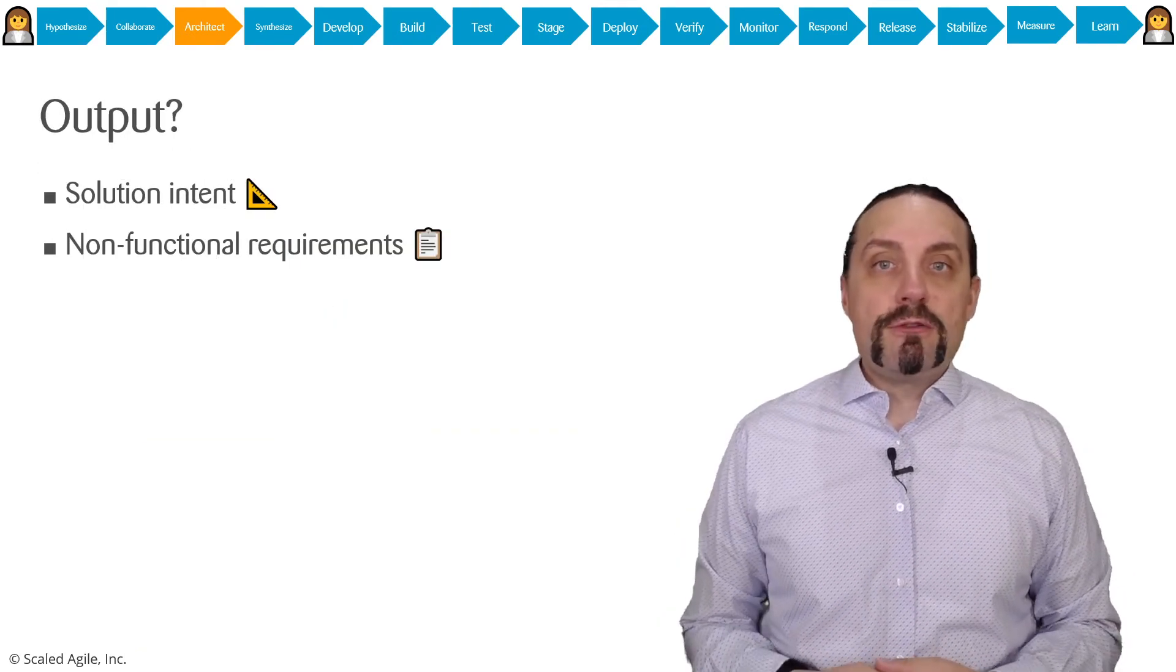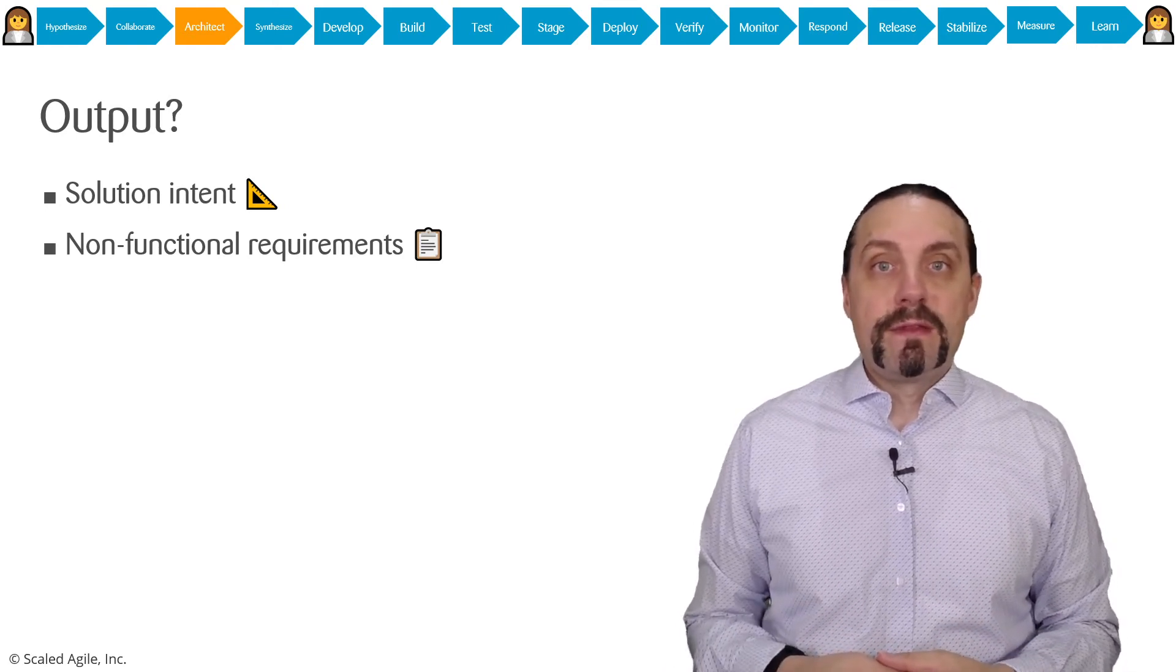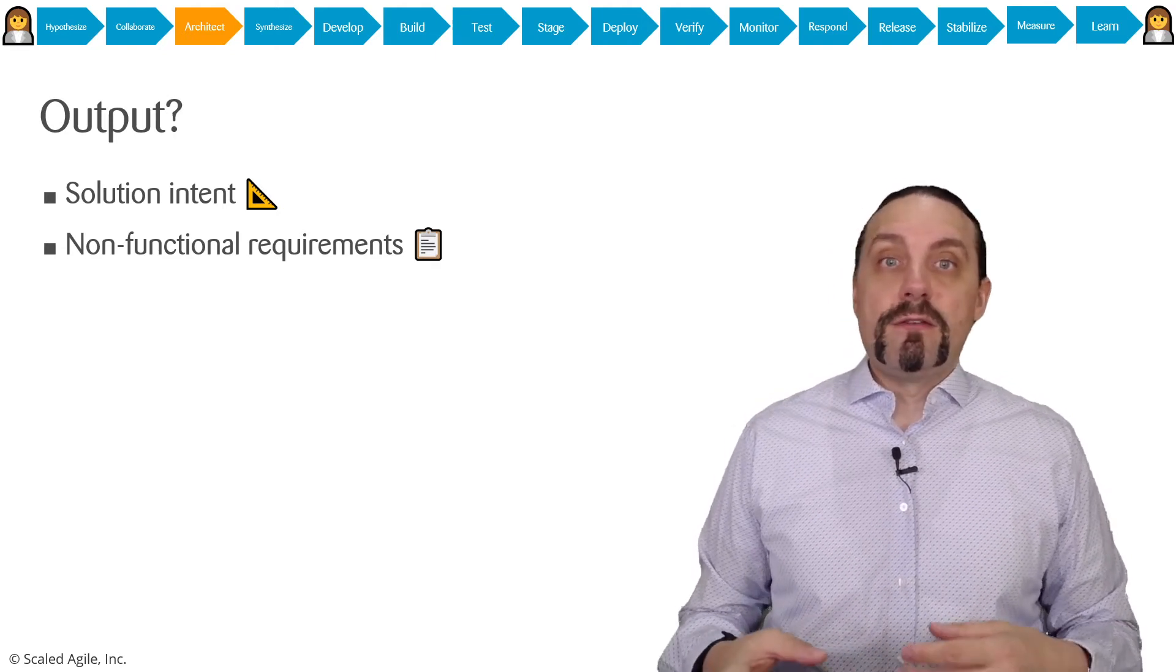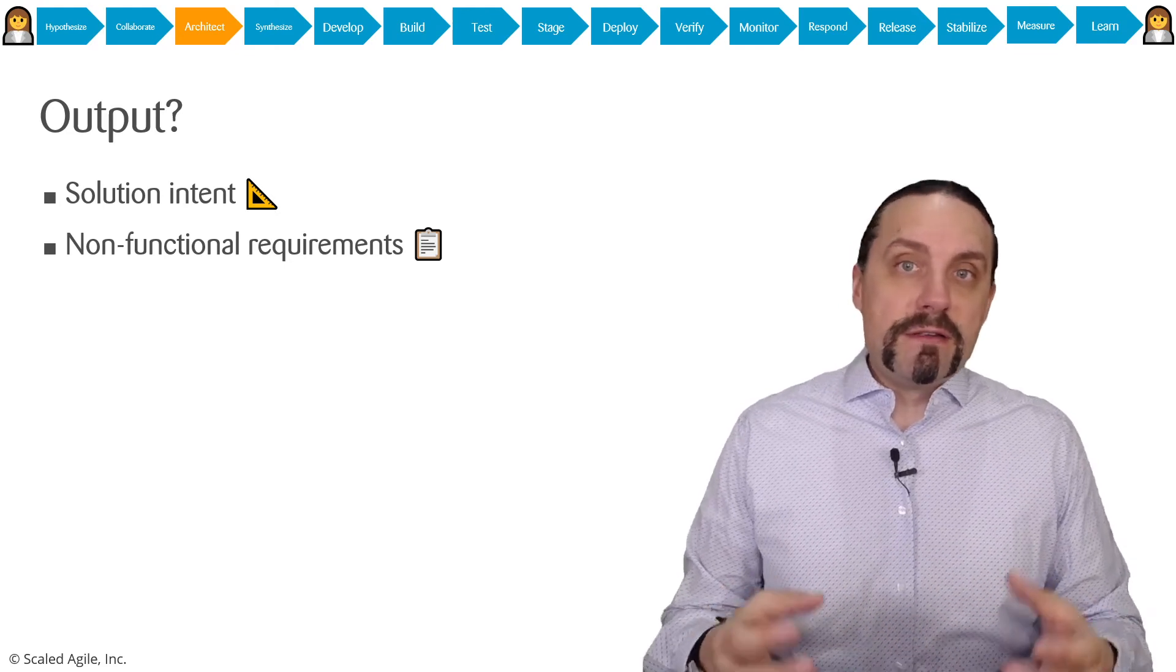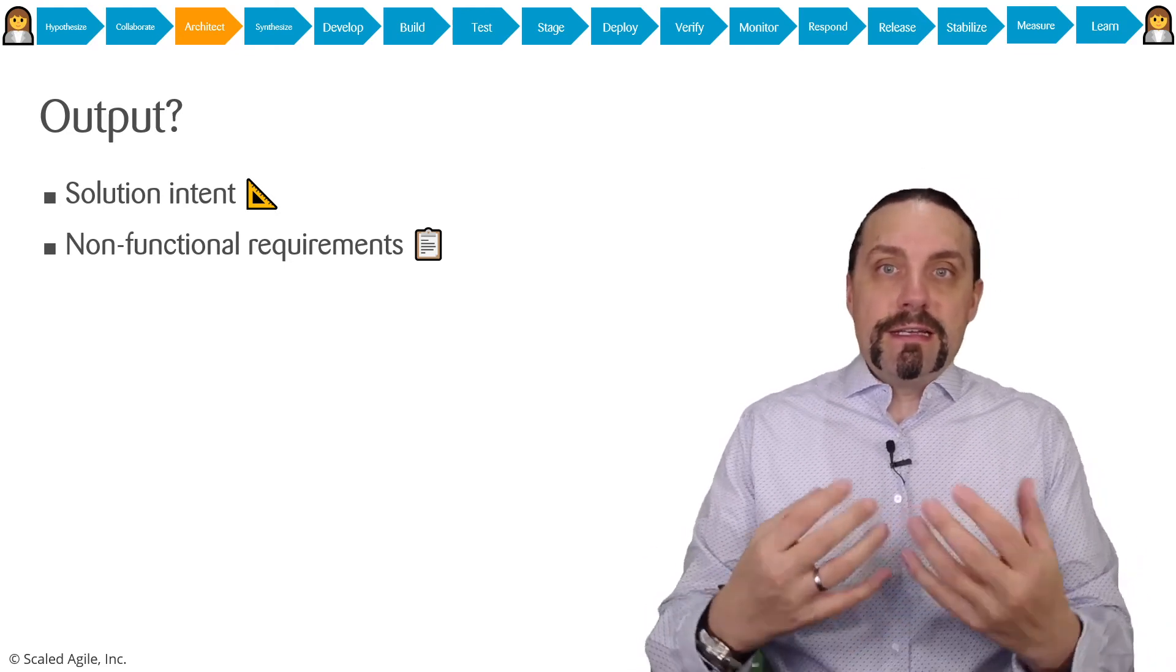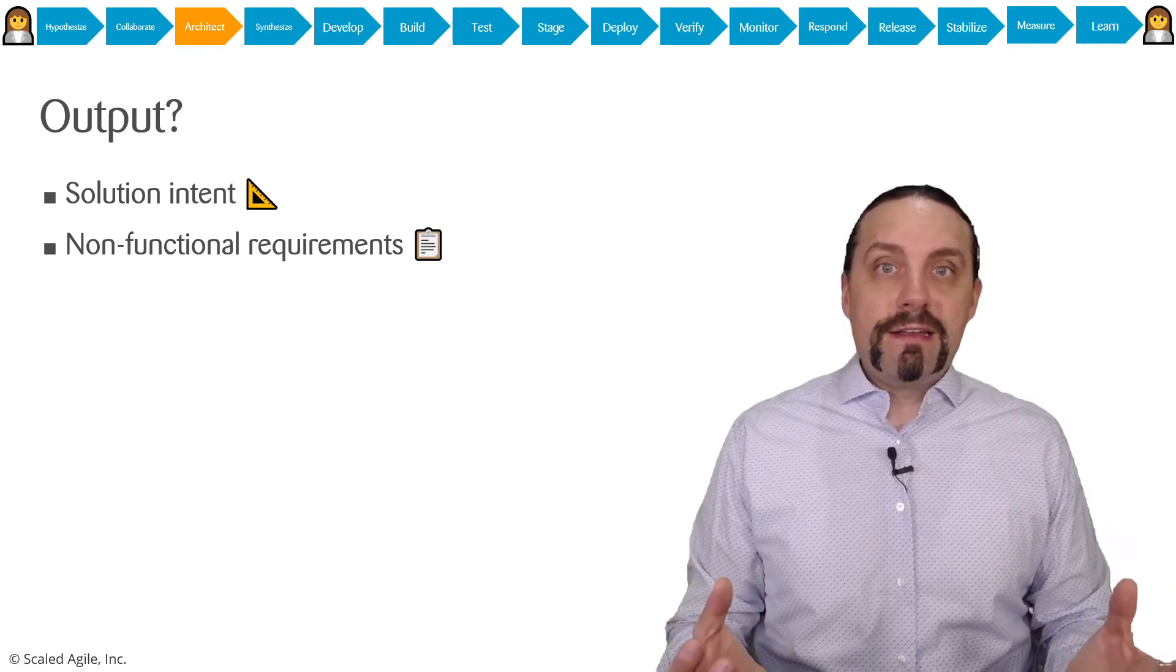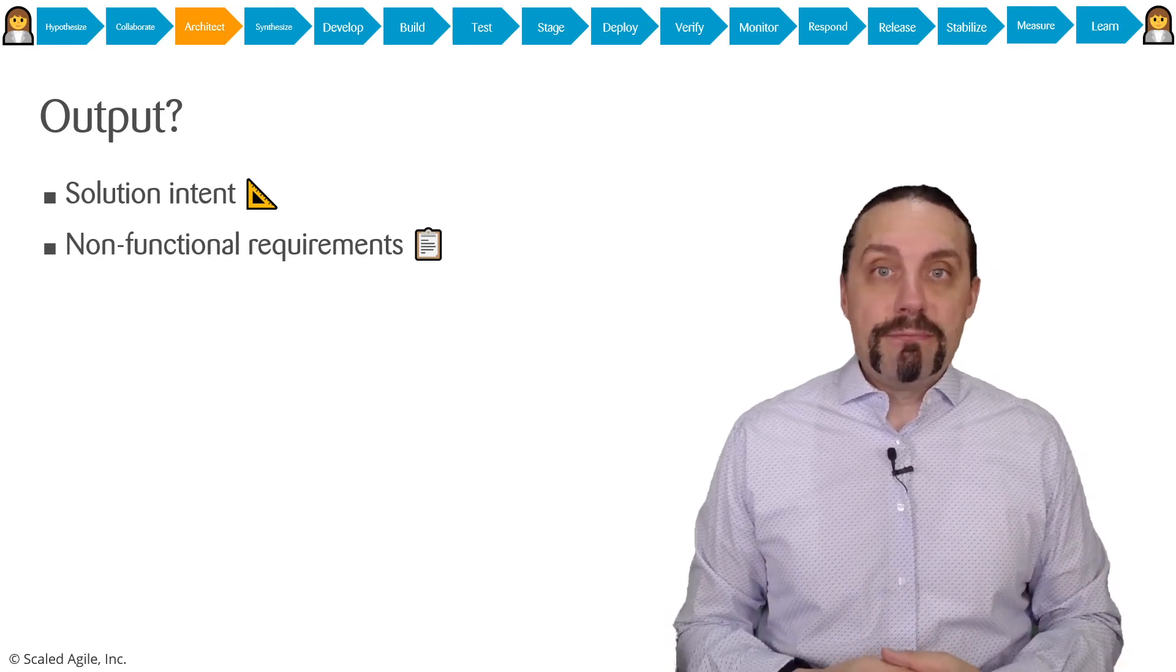What is the output when we've done this architectural step? First, we have a so-called solution intent, solution blueprint, or solution design. It's sort of an idea how we're going to architect this minimal architecture to prove this hypothesis.